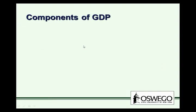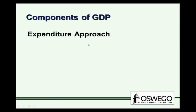To measure GDP, there are two approaches. One is we can add up all the expenditures. Or, on the other hand, we can add up all the sources of income in the U.S. economy to calculate GDP. Let's start with the expenditure approach.